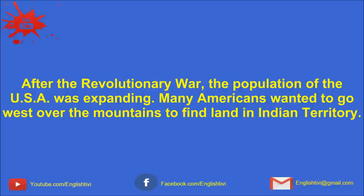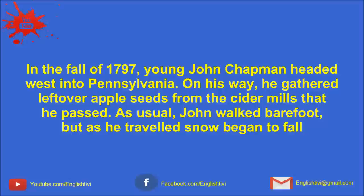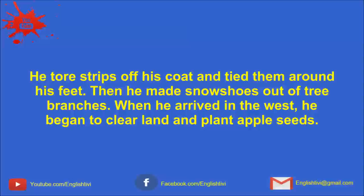John's father joined George Washington's army to fight for American independence from Great Britain. While the war was going on, John's mother died. In 1870, John's father married again, and soon John had lots of younger brothers and sisters. John probably worked on his father's farm as he was growing up. Then he worked on neighboring farms. It may be at this time that John began to learn about apples. After the Revolutionary War, the population of the USA was expanding. Many Americans wanted to go west over the mountains to find land in Indian territory. In the fall of 1797, young John Chapman headed west to Pennsylvania.